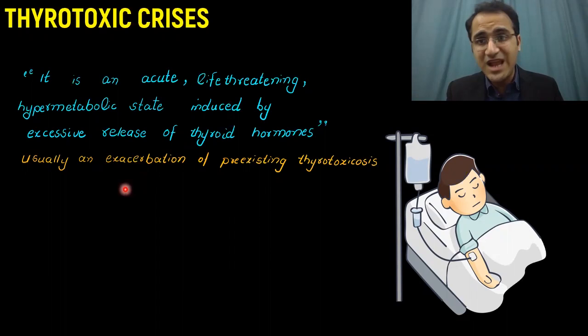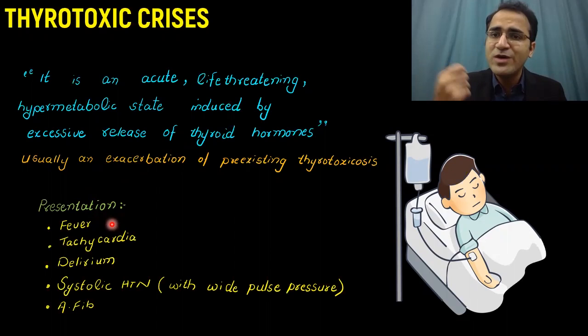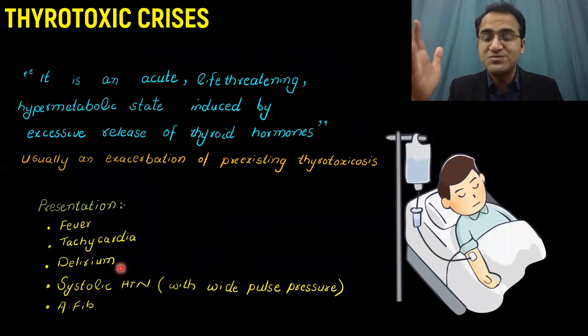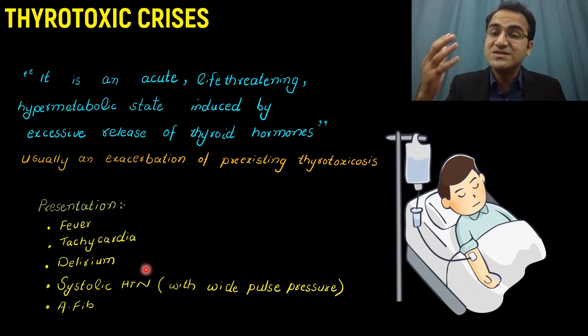The presentation is that the patient will be hypermetabolic. Therefore, they will have fever since the metabolic machinery is running very fast. There will be tachycardia and the patient will be delirious. There will be systolic hypertension. Thyroid hormones cause tachycardia, increased gut motility, increased metabolism, generate heat and fever, and the systolic blood pressure will be very high.